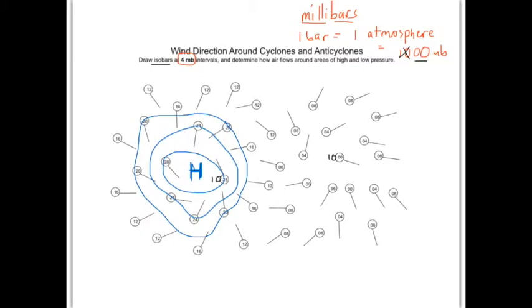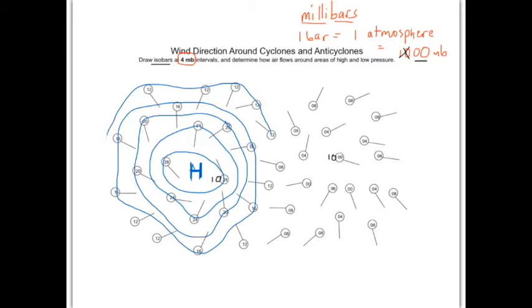Now thousand and sixteen — connect the sixteens, not the twelves. And then the twelves are all the way on the outside. So they're not perfectly concentric, but for the most part they are.